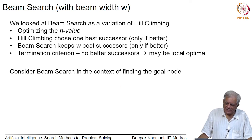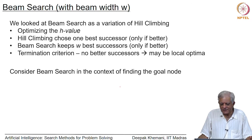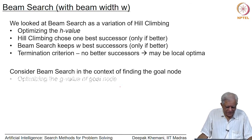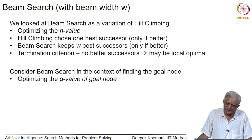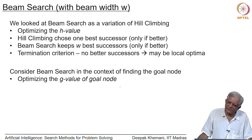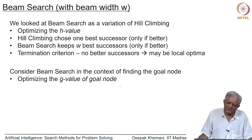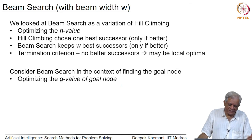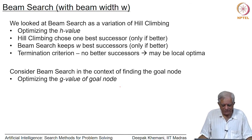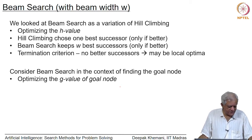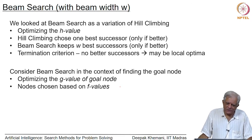When we consider beam search in the context of finding the goal node — which is our goal in A* — we are interested in finding an optimal path to the goal node. What we are optimizing is the cost of the path found, which is the g value of the goal node. Earlier we tried to optimize the heuristic value, but now our task is to find an optimal cost path to the goal, and the algorithm uses a combination of g and h values called f values.